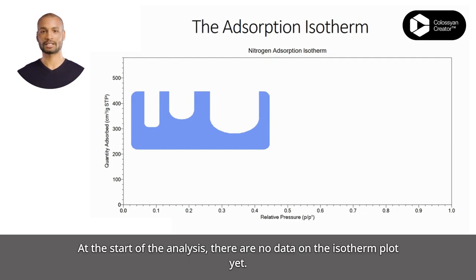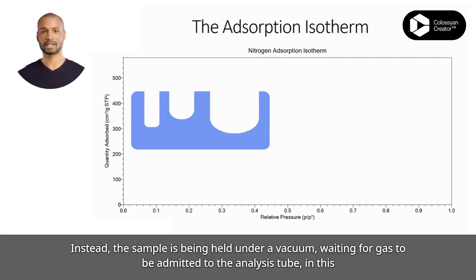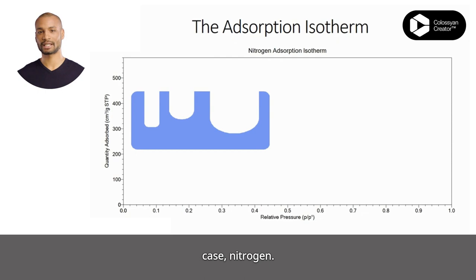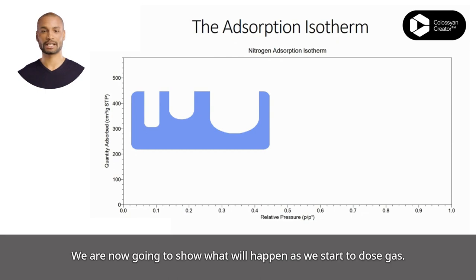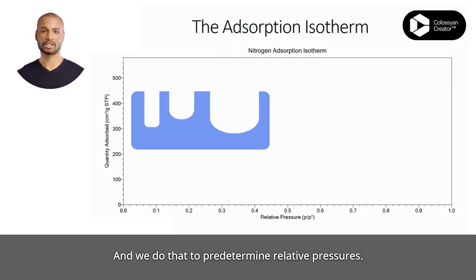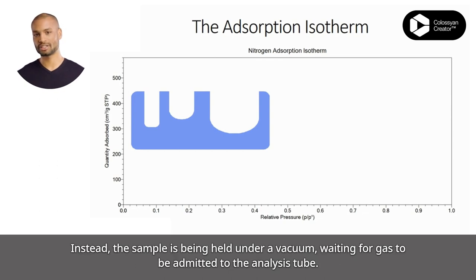At the start of the analysis, there are no data on the isotherm plot yet. Instead, the sample is being held under a vacuum, waiting for gas to be admitted to the analysis tube — in this case, nitrogen. We are now going to show what will happen as we start to dose gas, and we do that to predetermine relative pressures.